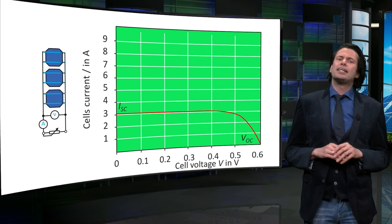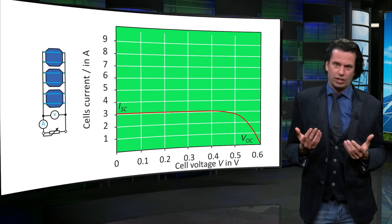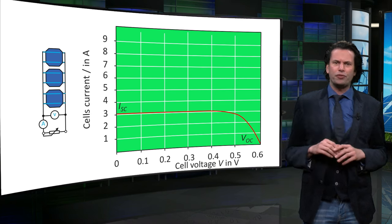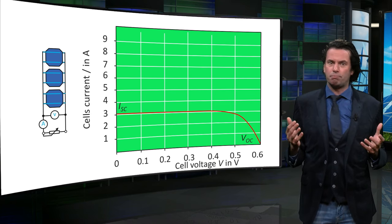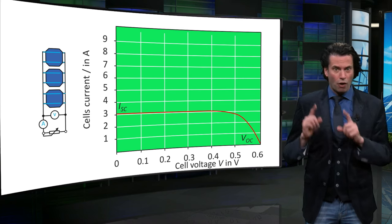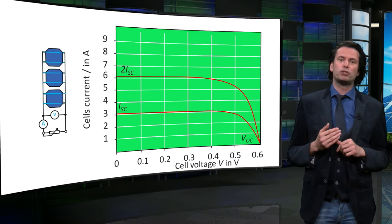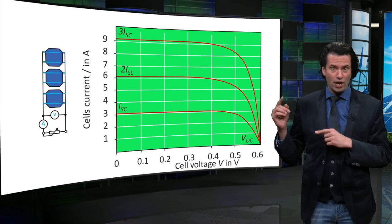The second option is a parallel connection of the cells. Now the voltage across all the cells in parallel is constant. However, the current produced by each cell now adds up.